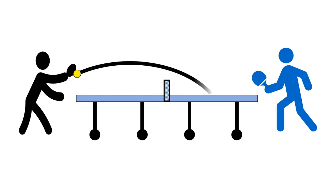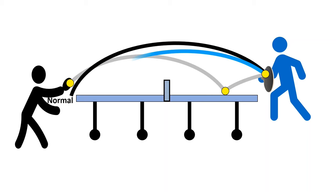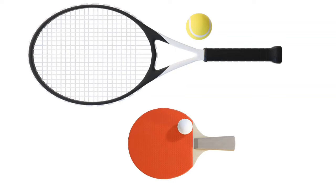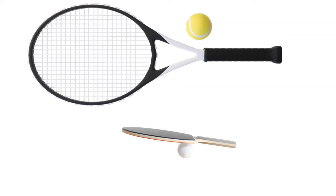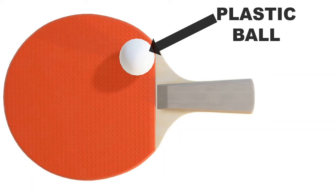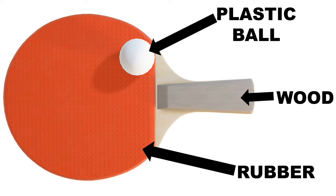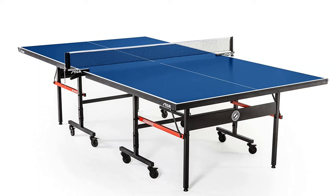Table tennis is a sport like tennis but played on a table. The racket and ball are different — it's played with a small plastic ball, and the racket is also small. It doesn't have strings; it's made of wood and has rubber on both sides, so you can make spins with the plastic ball.